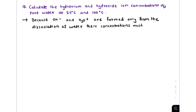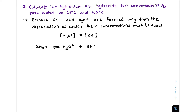Because water dissociates to form hydronium and hydroxide ions, their concentrations remain equal — that is, [H₃O⁺] = [OH⁻]. The water dissociation reaction is: 2H₂O → H₃O⁺ + OH⁻. For this reaction, we can write the equilibrium constant expression as K = [H₃O⁺][OH⁻] / [H₂O]².